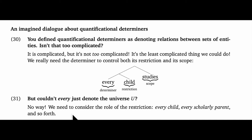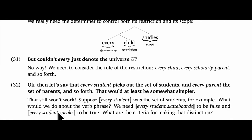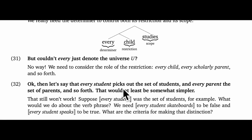And here I can be firm: no way. We need to consider the role of the restriction. Every child, every scholarly parent, and so forth. And so the student says: okay, then let's say that every student picks out the set of students, and every parent the set of parents, and so forth. That would at least be somewhat simpler.